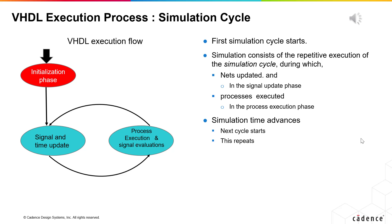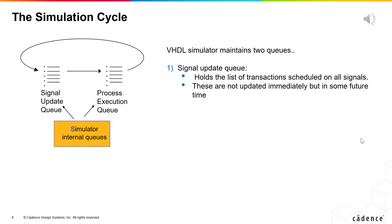Simulation execution is very precisely defined in VHDL to avoid issues with race conditions and nondeterminism, which affect other languages. VHDL simulation consists of the repetitive execution of the simulation cycle, during which processes are executed and nets updated. Let us look at the simulation cycle in more detail.